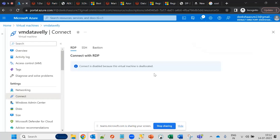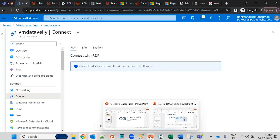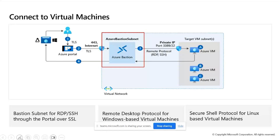While the virtual machine is starting from stop mode, the connection option is not yet available. In the portal, you choose whether it is a Windows or Linux VM to connect. TLS stands for Transport Layer Security and is used for encryption in transit. You can enable TLS and also choose whether to use Azure Bastion.